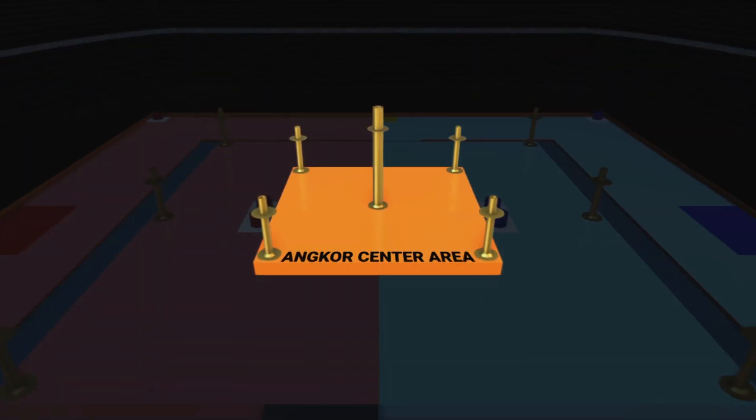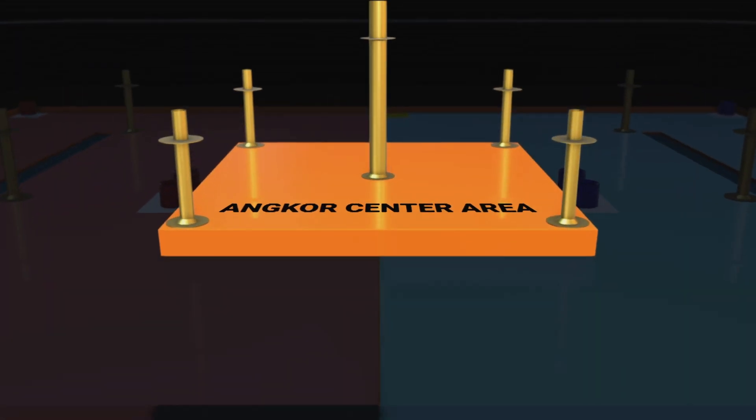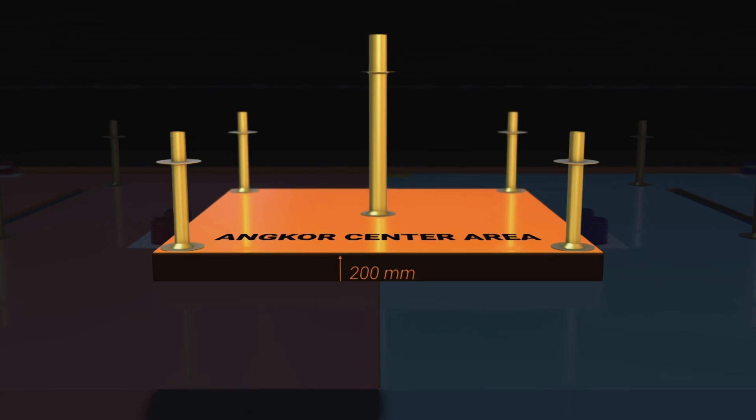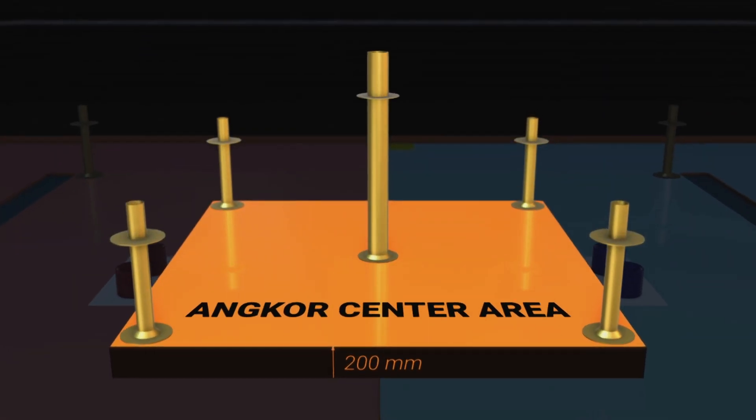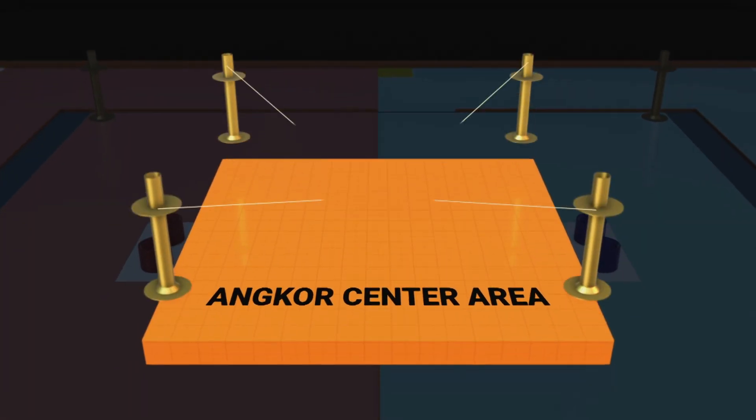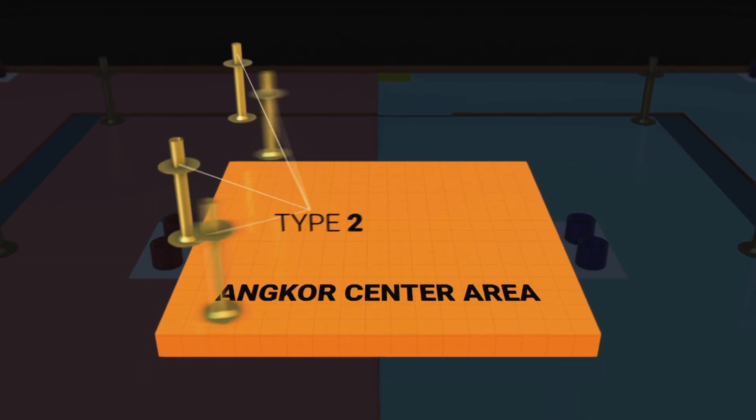The game field has Angkor Center area in the middle, which is raised 100mm from Angkor Wat area. There are four poles which are type 2 poles inside the corner of the Angkor Center area.